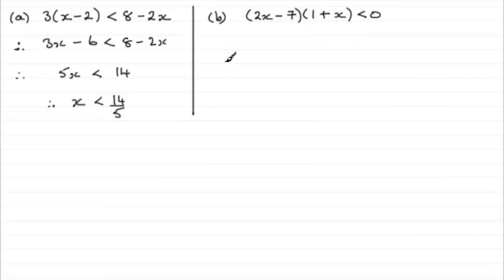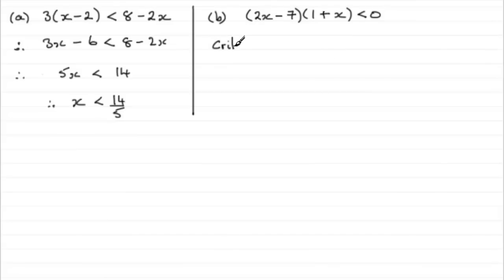When it comes to part b, what we've got here is going to be a quadratic inequality. You don't need to expand this — if you do, you're just going to get 2x squared, so you can see it's going to be a quadratic inequality. What you need to do is certainly don't make the mistake of saying 2x minus 7 is less than 0, or 1 plus x is less than 0 — you will get it wrong if you do that. What we've got to do is find what are called the critical values. These are the values of x that make this equal to 0. If you're unsure about this, just go on my website and look under solving quadratic inequalities, and you'll see about critical values.